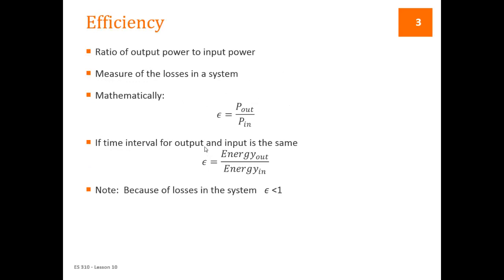Whenever you have a machine, we talk about the efficiency of that machine. The efficiency of anything, a system, a machine, of your ability to do homework, is the ratio of the output to the input. So in the case of a machine, we're going to look at the output power to the input power. So you have to put some amount of power into the machine to make it work, and you get some amount of power out of the machine. It's also a measure of the losses in the system. Because no machine can create power, and every machine has some amount of friction or losses in the machine, the efficiency is always going to be less than 1.